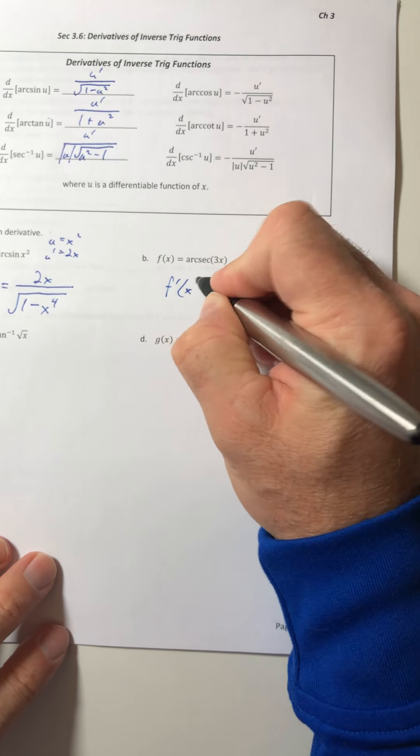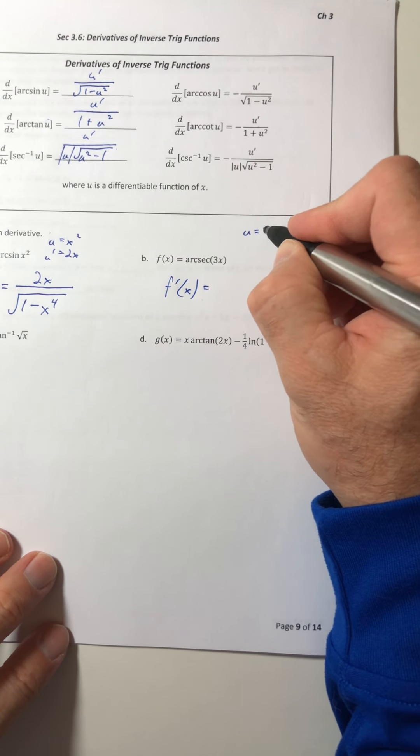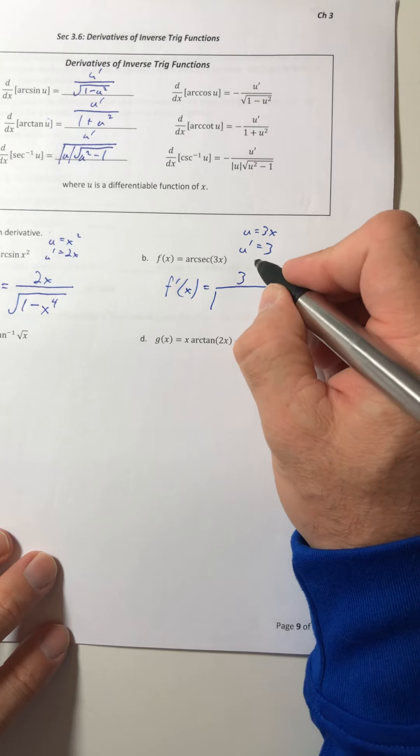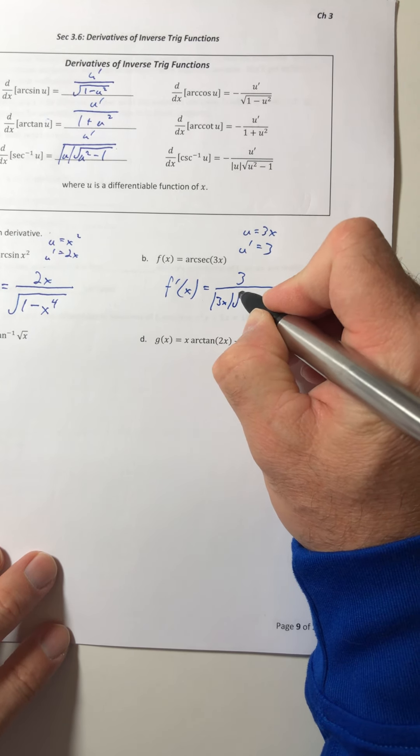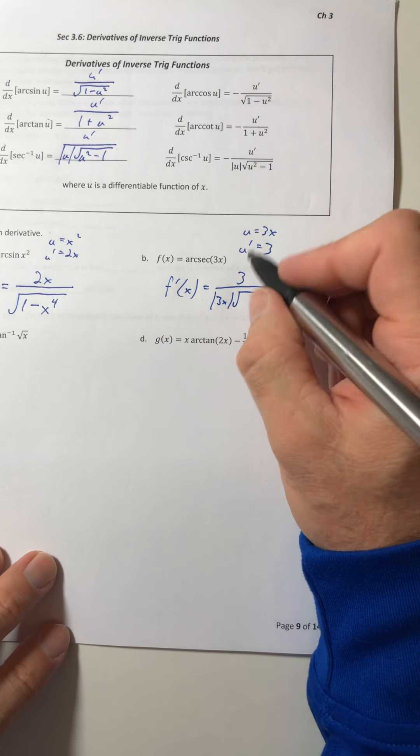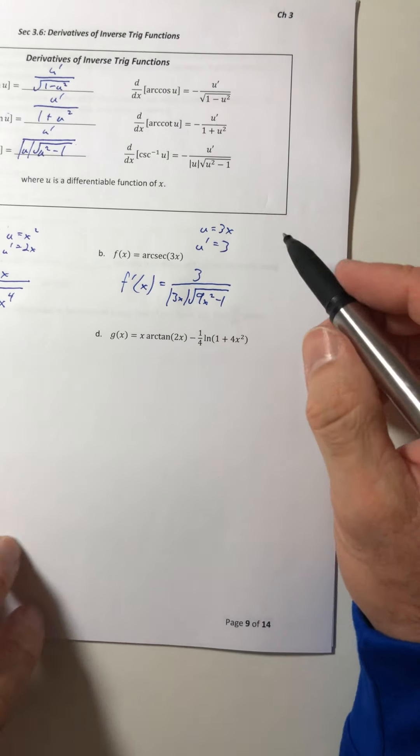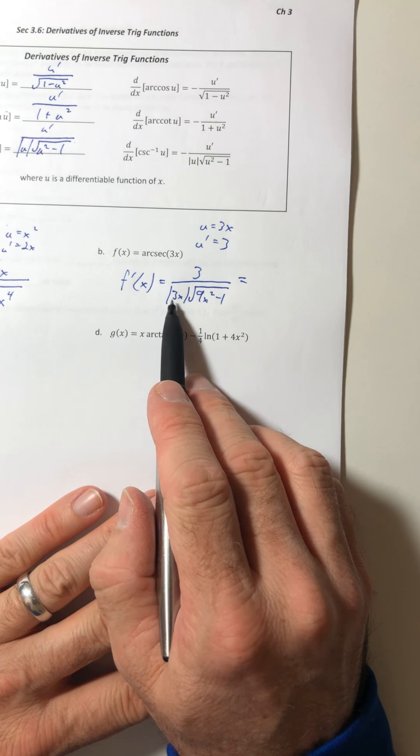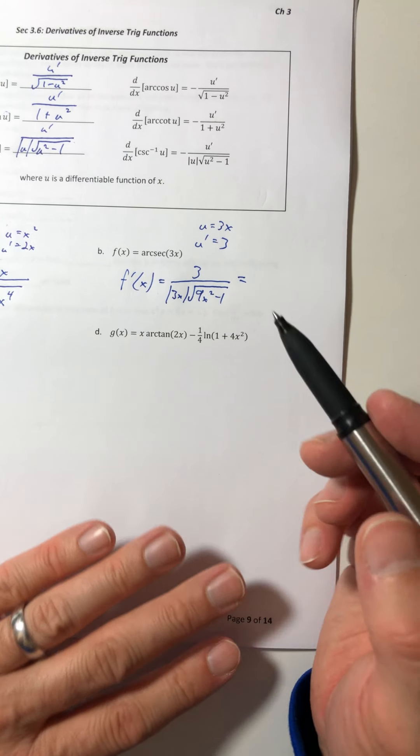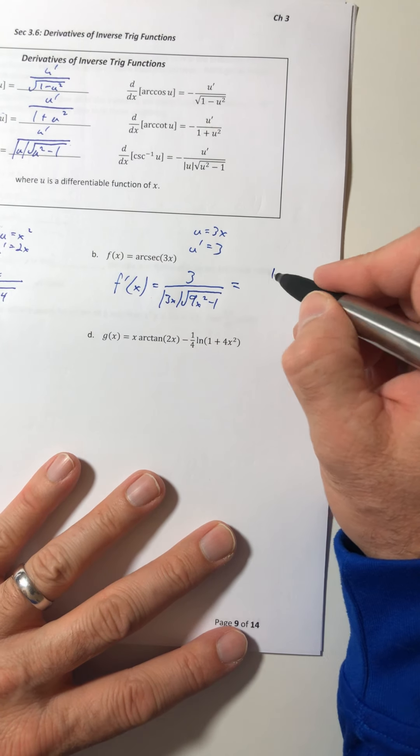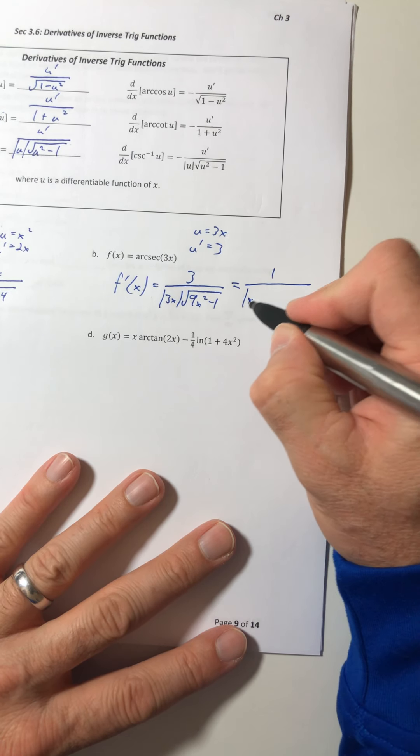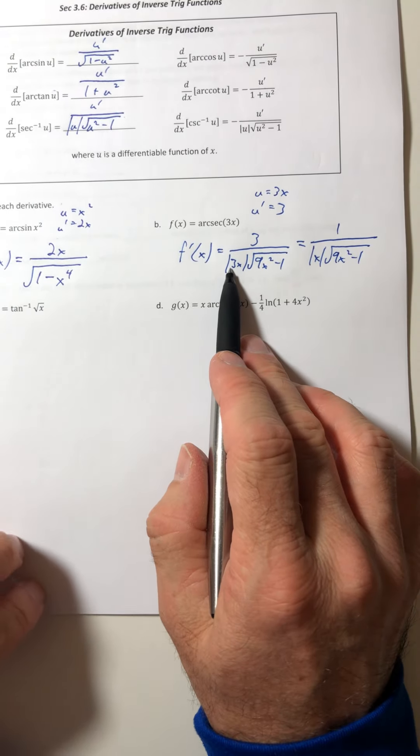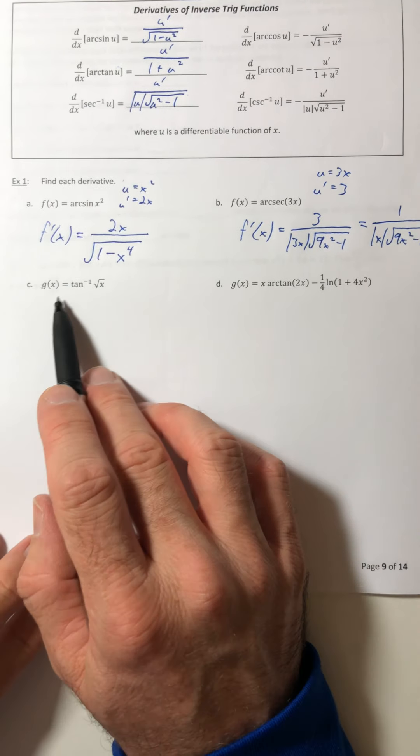Part b, arc secant of 3x. So your u is 3x, which means u prime is 3. So the u prime is on top. Then do the absolute value of u or 3x times the square root of 9x squared minus 1. Now sometimes with the arc secant, you can simplify this out. Because in the absolute value, you can pull out a constant. So you can pull a 3 out of there as long as you keep it positive. So the 3s are actually going to cancel. So we end up with 1 over absolute value of x root 9x squared minus 1. Now you can only do that with constants. Don't pull a variable out. All right, moving on.